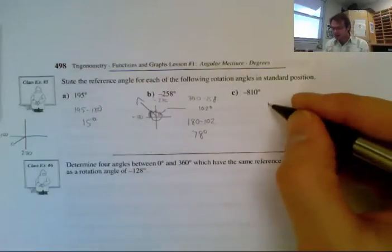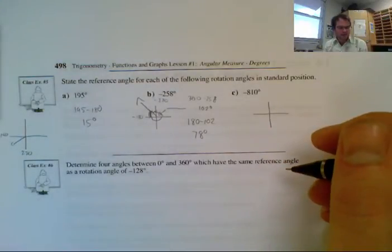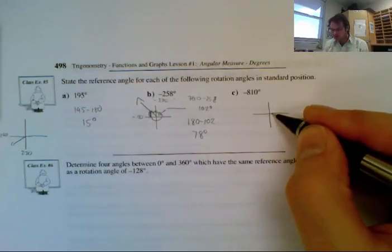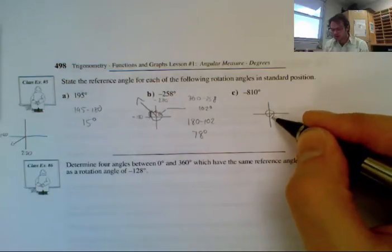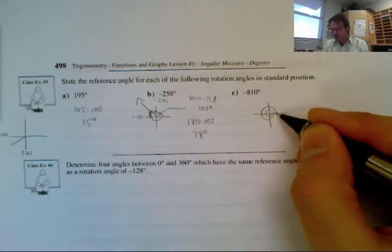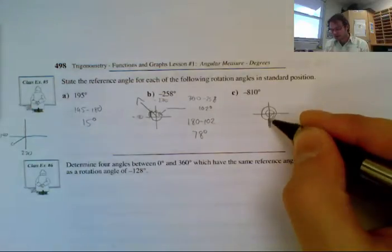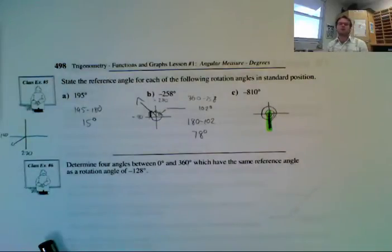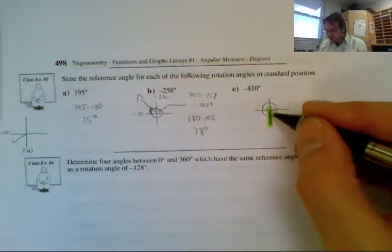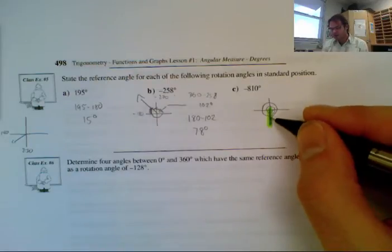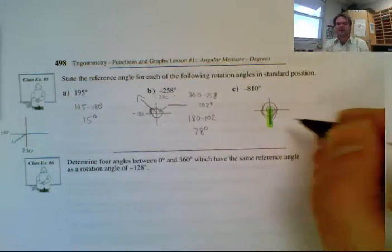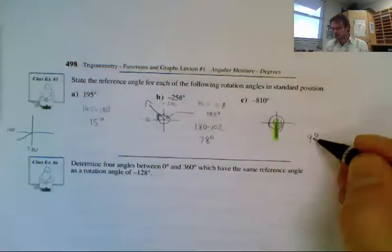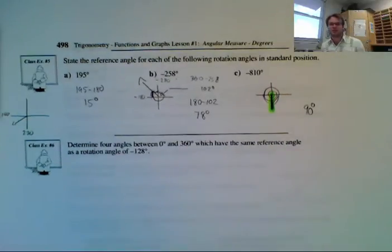Now we're looking at negative 810. We have to see how many times that goes around. Negative 810 — I go around once is negative 360, then 720, and then 720 plus 90 is going to be right here. So that right there is going to be my angle. It's going to be 90 from each side. Since it's at the 270, it's going to be 90 degrees as my reference angle.